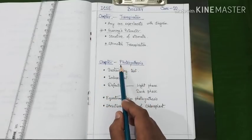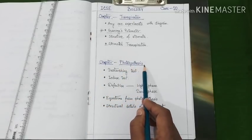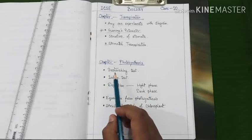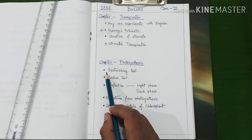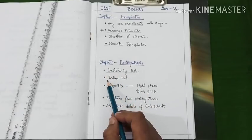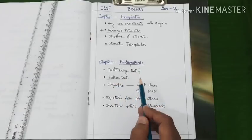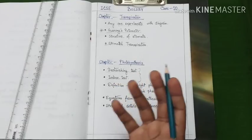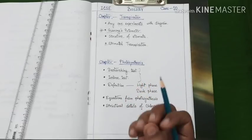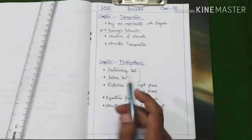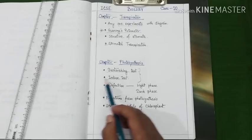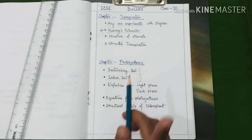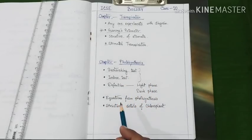Now let us know about the important topics of next chapter, photosynthesis. First of all, you have to study details of destarching test and iodine test. Both these questions may appear on their significance, on their application, why these tests are performed. So you need to prepare both these tests and you may certainly expect any one test in the exam.